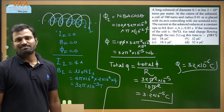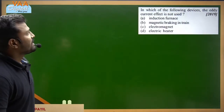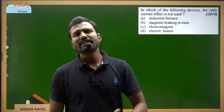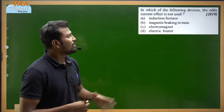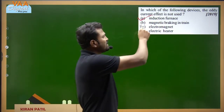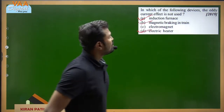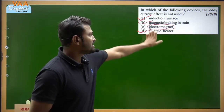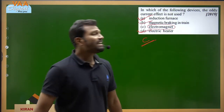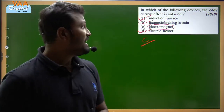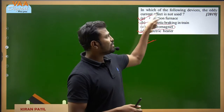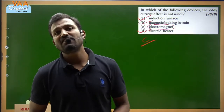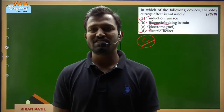Next question: in which of the following devices is the eddy current effect NOT used? Eddy currents are circulating currents that cause large heat losses. They are used in induction furnaces, magnetic braking, and heaters. However, they are NOT used in electromagnets — using eddy currents there would cause unwanted energy loss. The correct answer is C: electromagnets.